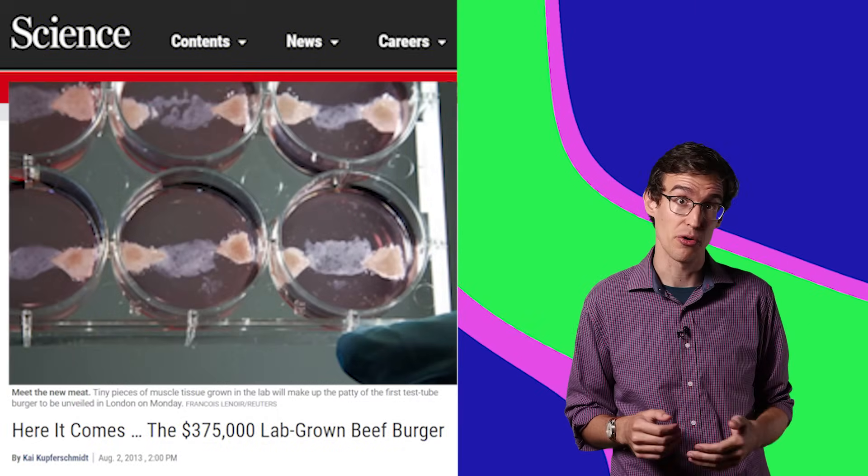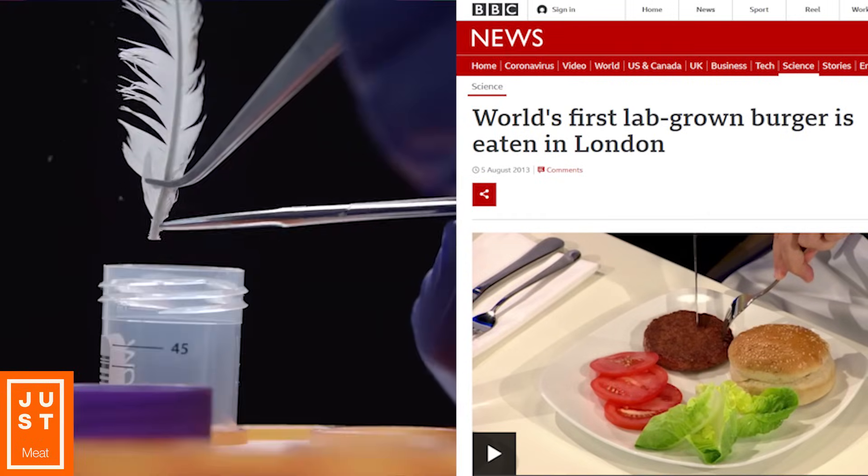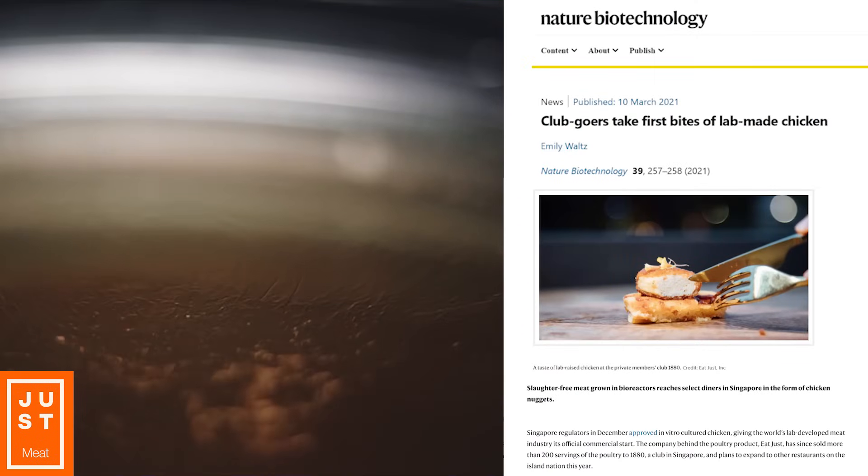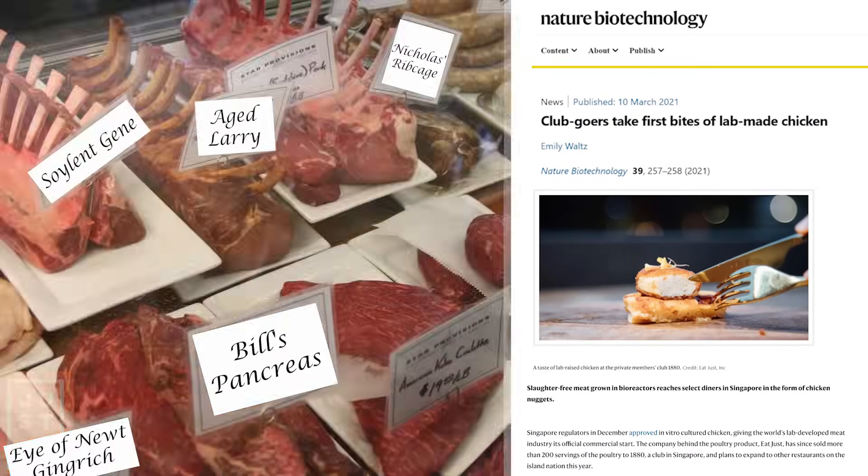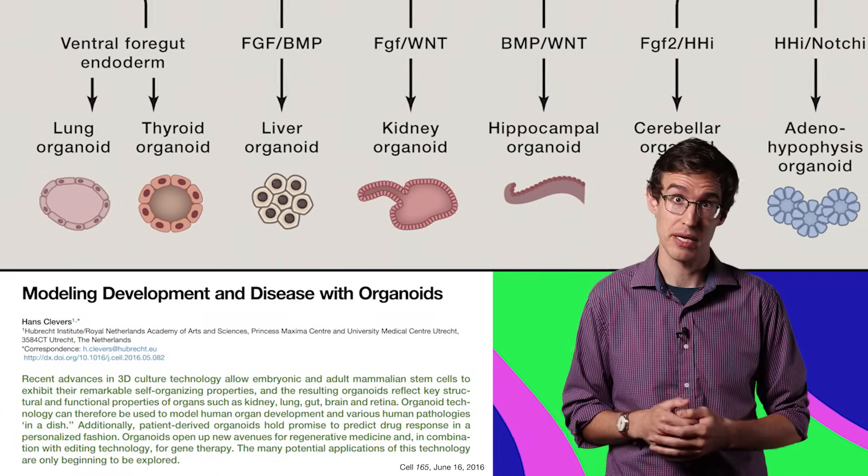If you start with cow cells, you can grow a burger. Start with chicken cells, you can grow a chicken nugget. And if you start with human cells, you can grow a buffet that would make Hannibal Lecter's mouth water. You can grow the raw materials for any organ, if you know the recipe.